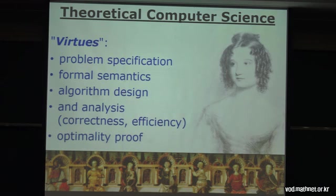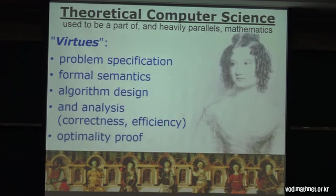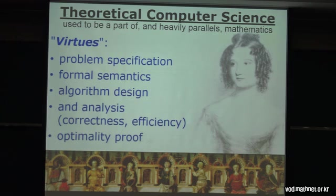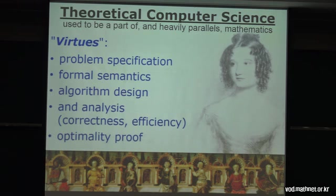What I'd like to emphasize is that these are not just virtues of theoretical computer science — this is basically the essence of all of mathematics. In mathematics, in a theorem, you first specify the hypothesis — that's like problem specification. Formal semantics corresponds to the axioms you're supposing, like whether you talk about general rings or factorial rings. Algorithm design and analysis corresponds to giving a proof, not just the claim. And optimality corresponds to showing that none of the hypotheses can be dropped without making the claim wrong.